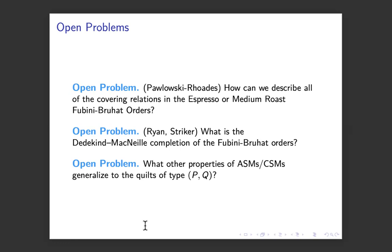And both Stark and Jessica Stryker asked the question at different times. What is the Dedekind-MacNeille completion of the Fubini-Bruhat orders? And while we have embedded the medium roast into this quilt lattice, it's not the Dedekind-MacNeille completion. That's too big. So there is something smaller that we might want to find.